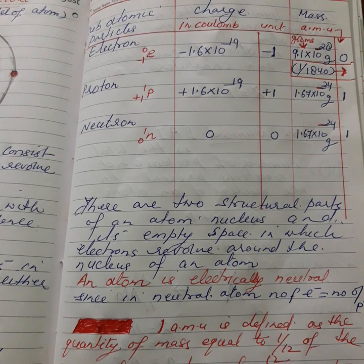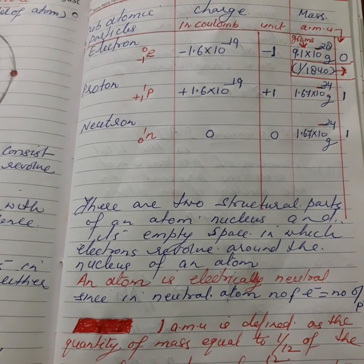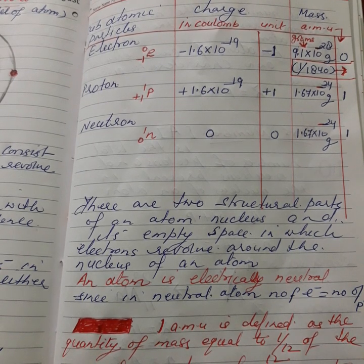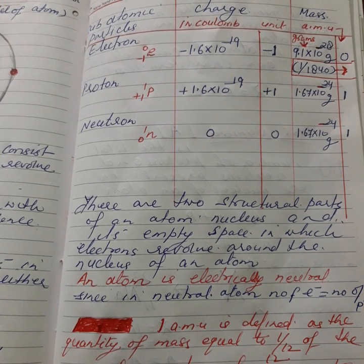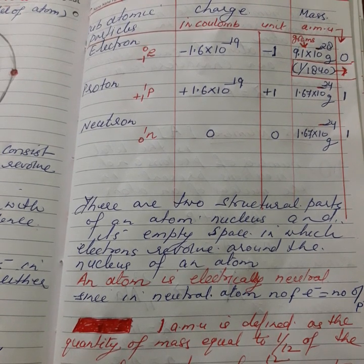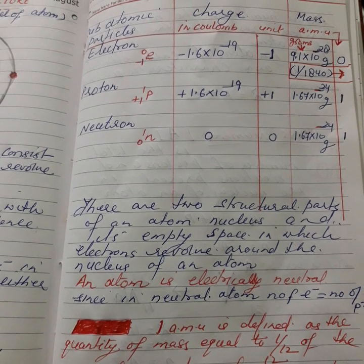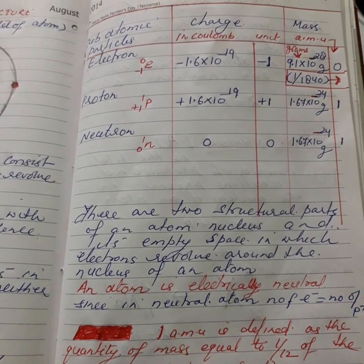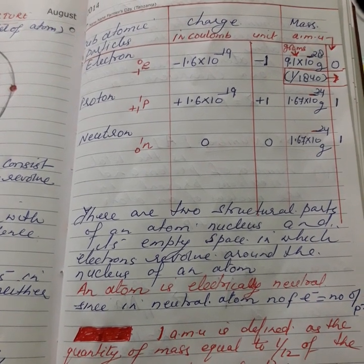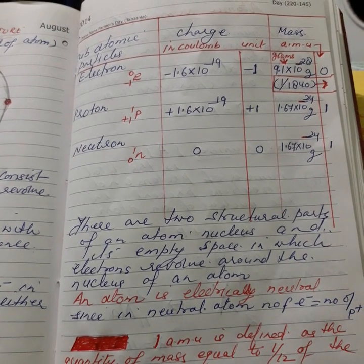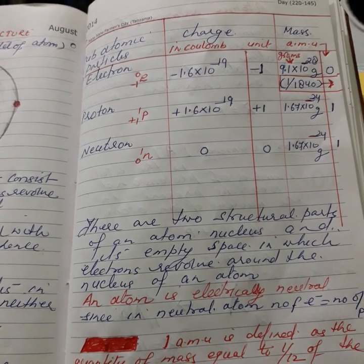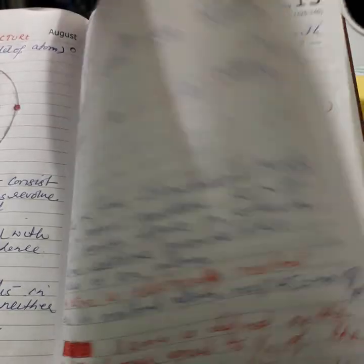These are the characteristics of the subatomic particles of an atom. One more important point: an atom is always electrically neutral. Why? Because the number of electrons is equal to the number of protons, meaning the total negative charge equals the total positive charge, and that is why the atom is always neutral.